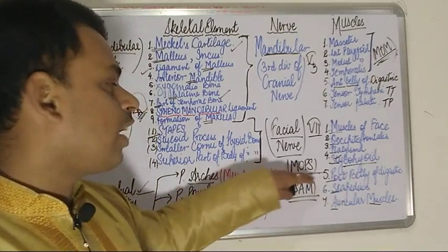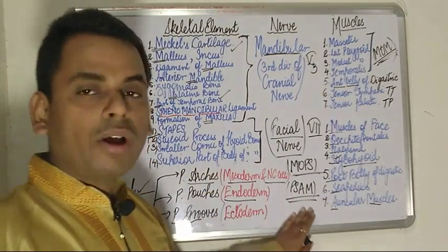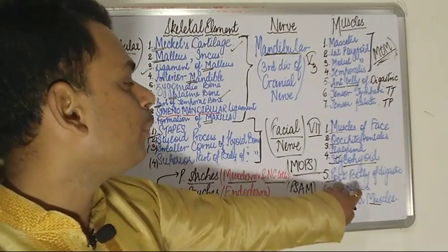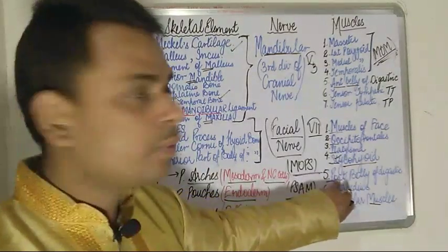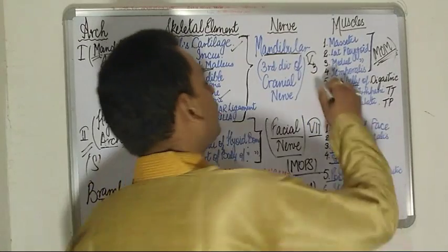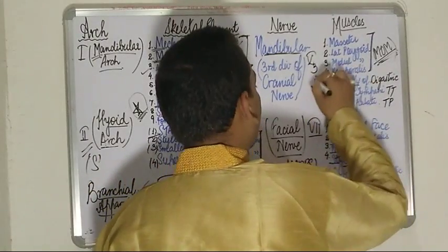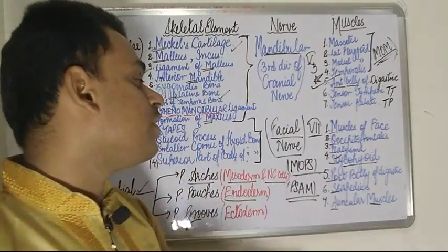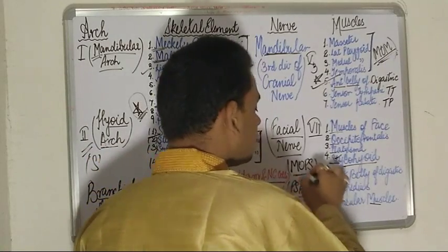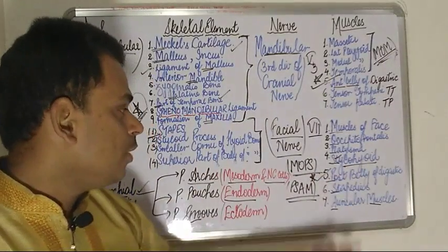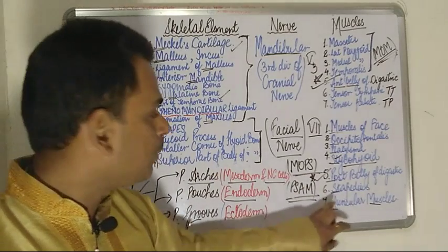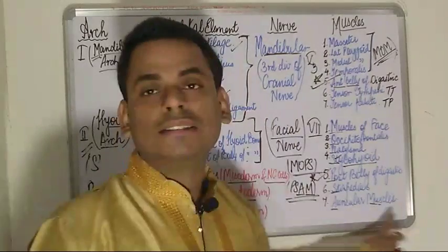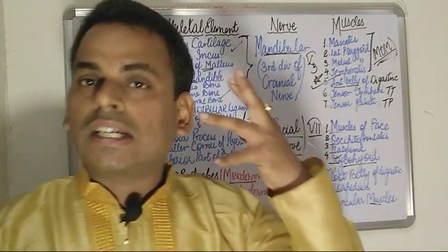Continuing with the second part of the mnemonic — 'PSAM': P for posterior belly of the digastric (note: the anterior belly of the digastric is from the first arch, while the posterior belly is from the second arch), S for stapedius muscle, and A-M for the auricular muscles surrounding the auricle.